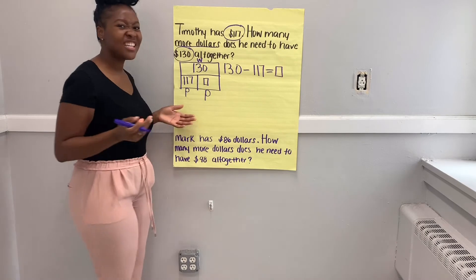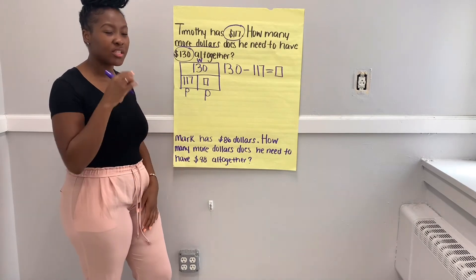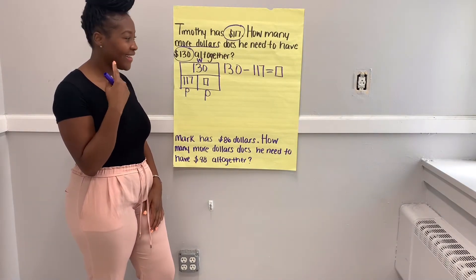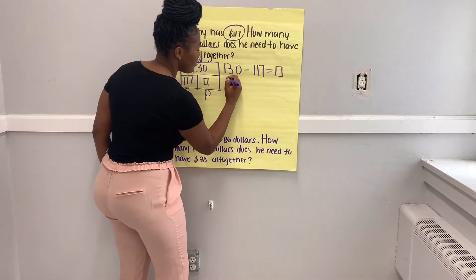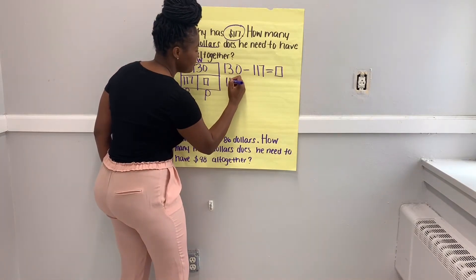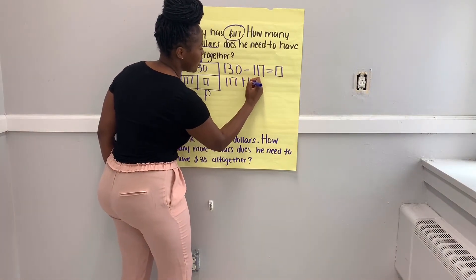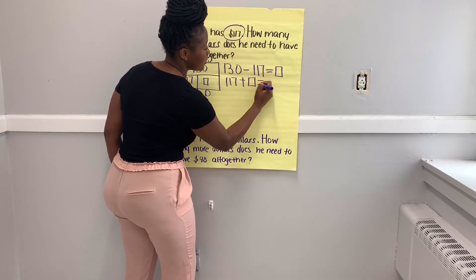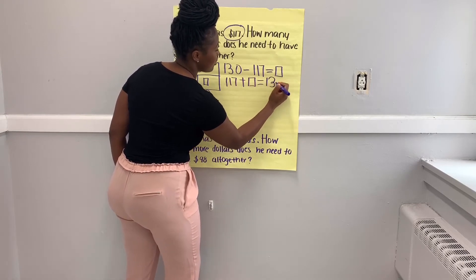What's another way we can write our number sentence? Did you write it another way? Good — so you did your known part plus your unknown part equals our whole.